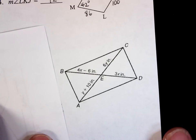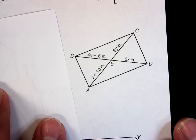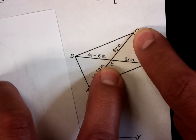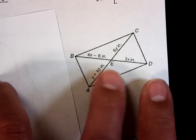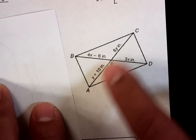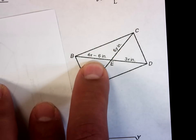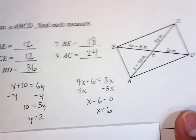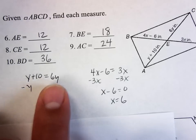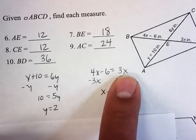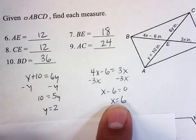Scroll it on down. So they give me a parallelogram ABCD. Now remember, my diagonals bisect each other. So from A to E must be the same length as E to C, and from B to E must be the same length as from E to D. So I can set these equal to each other. Y plus 10 must be equal to 6Y, and 4X minus 6 should be equal to 3X. And that's what I did down below here. I just set Y plus 10 equal to 6Y, solved it on down, Y is equal to 2. I set 4X minus 6 equals to 3X, worked it on down, and I got X is equal to 6.